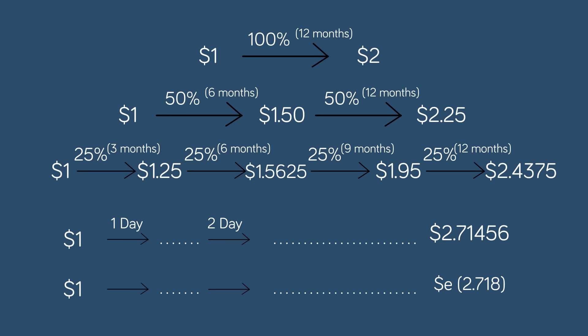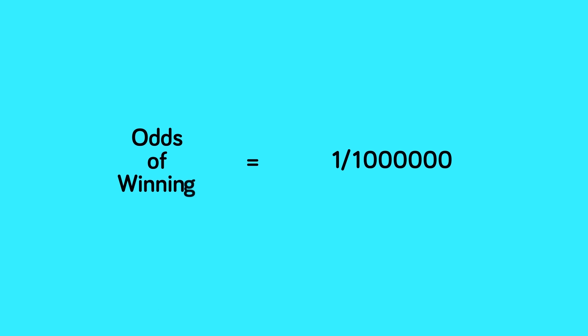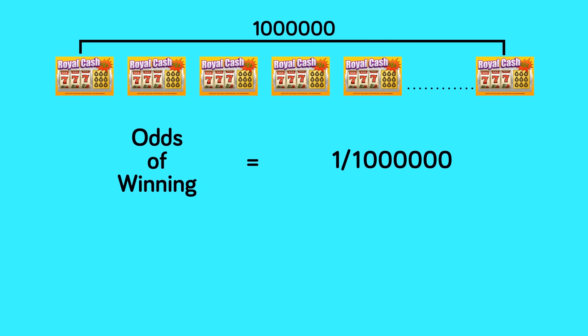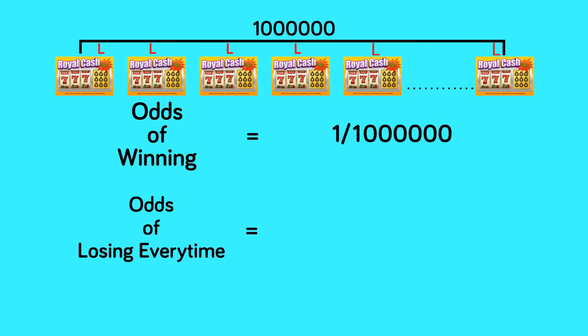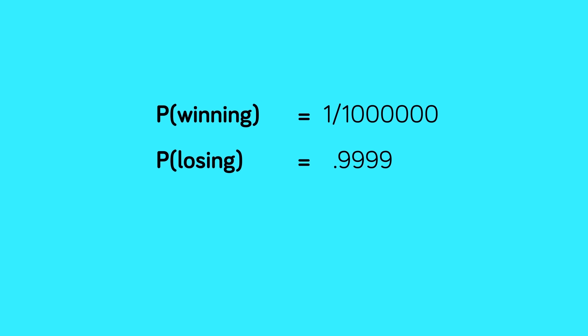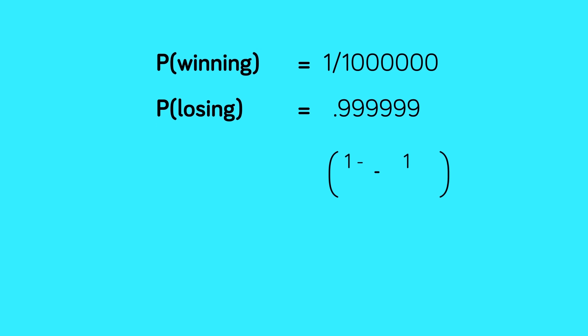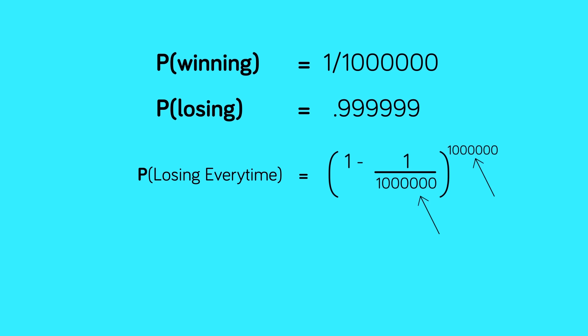Now that's what we learned in high school at the minimum. Let's see the other times E shows up across math and science in ways that usually have nothing to do with compounding interest. First: probability. Let's say there's a 1 in a million chance of winning the lottery. If you play the lottery a million times, your odds of losing every time is about 1 over E, or 36.8%. This will always be the case for games with small probability. A 1 in a million chance of winning means you have a .999999 chance of losing — raise that to the 1 million, and as this value gets very large, with a minus sign, the whole thing approaches 1 over E.